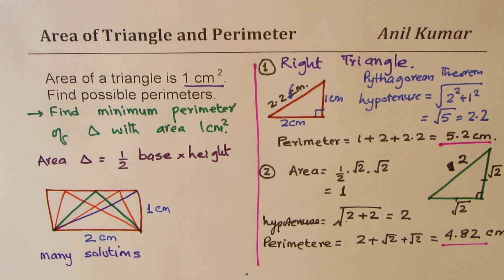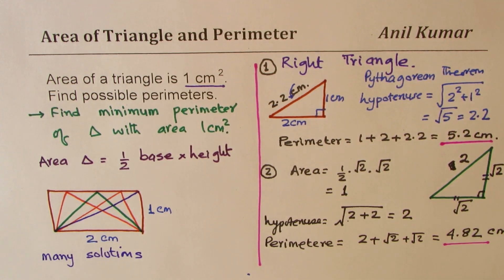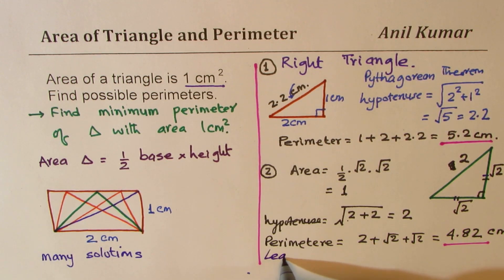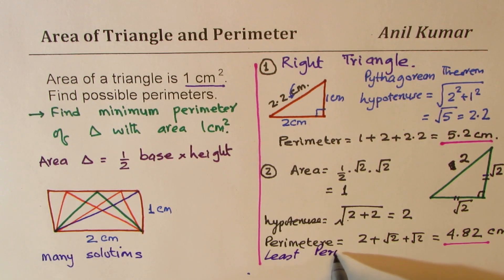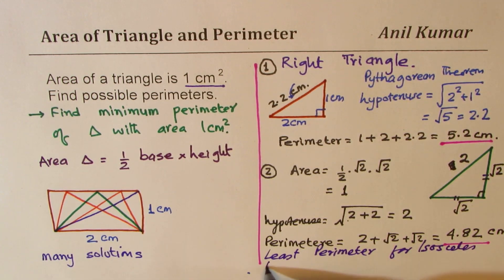What we notice here is that if we have same sides of length and height in the right triangle, we get maximum area for smaller perimeter, or for a given area, we get least perimeter. So this exercise helps you to understand that we get least perimeter, the minimum perimeter for isosceles right triangle.